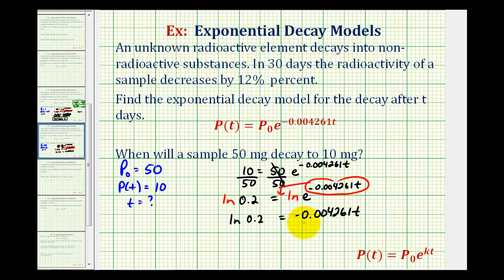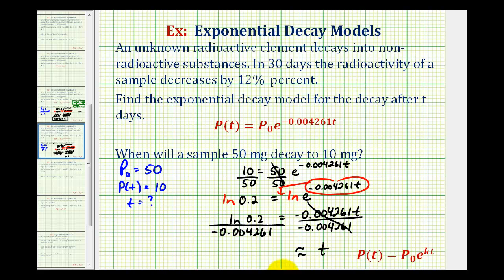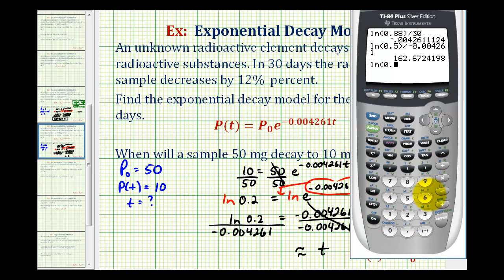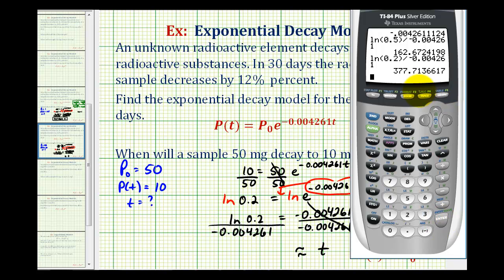Since ln(e) = 1 we leave it off, and dividing both sides by the coefficient gives t = ln(0.2) / (-0.004261). We should recognize this time should be quite a bit longer than the half-life from the previous question. Computing the decimal approximation: t ≈ 377.7 days.